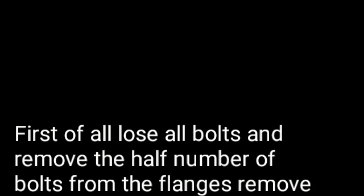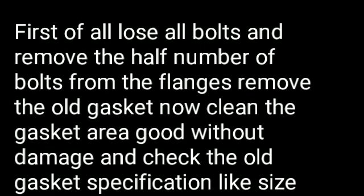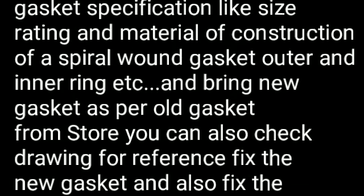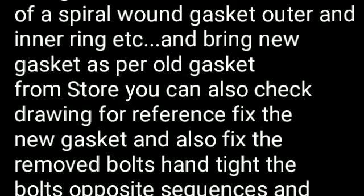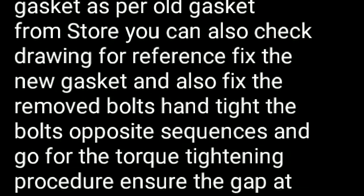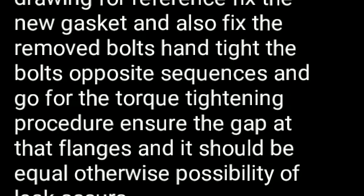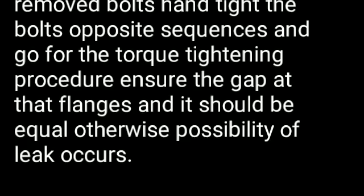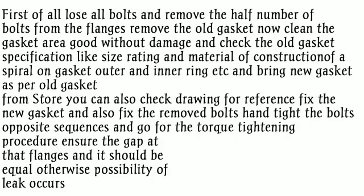The next question is: how do we change gaskets and tighten flange bolts? First, loosen all the bolts and remove half the number of bolts from the flanges. Remove the old gasket, clean the gasket area without damage, and check the old gasket specifications such as size, rating, and material of construction. Bring a new gasket as per the old gasket from stores — you can also check the drawing for reference. Fix the new gasket and the removed bolts, hand-tighten in an opposite sequence, then proceed with the torque tightening procedure. Ensure the gap at the flanges is equal, otherwise a leak may occur.